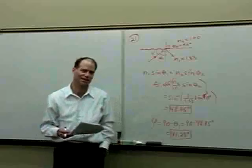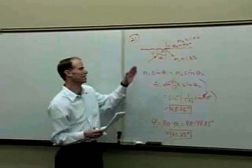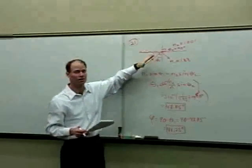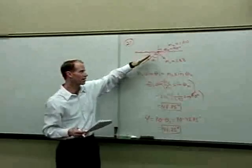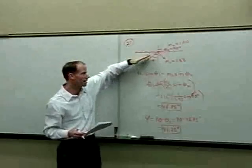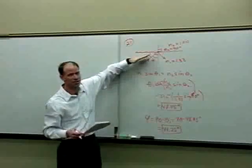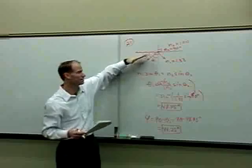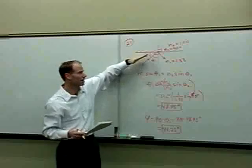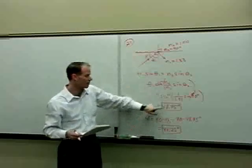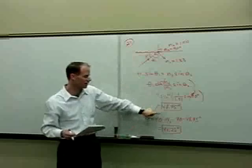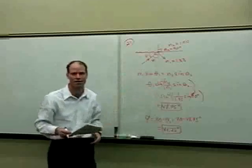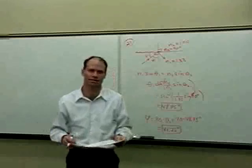One note: 41.25 degrees is just the critical angle where total internal reflection starts. Any angle less than that relative to the surface — meaning greater than 48.75 degrees of incidence from the normal — will also cause total internal reflection.